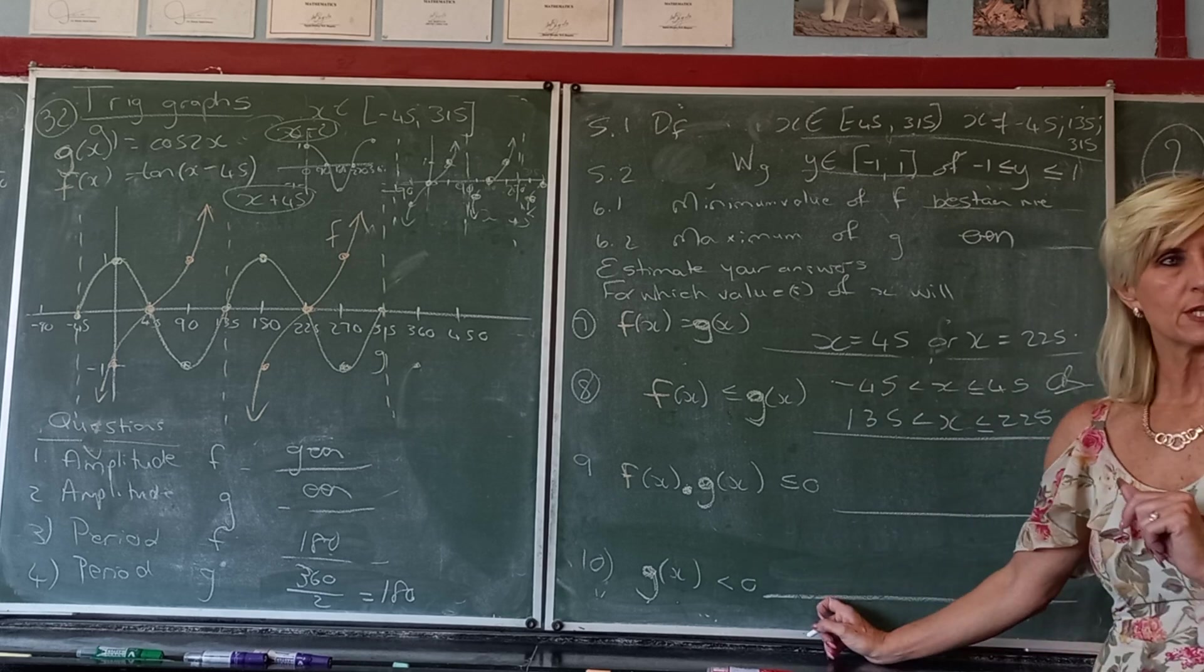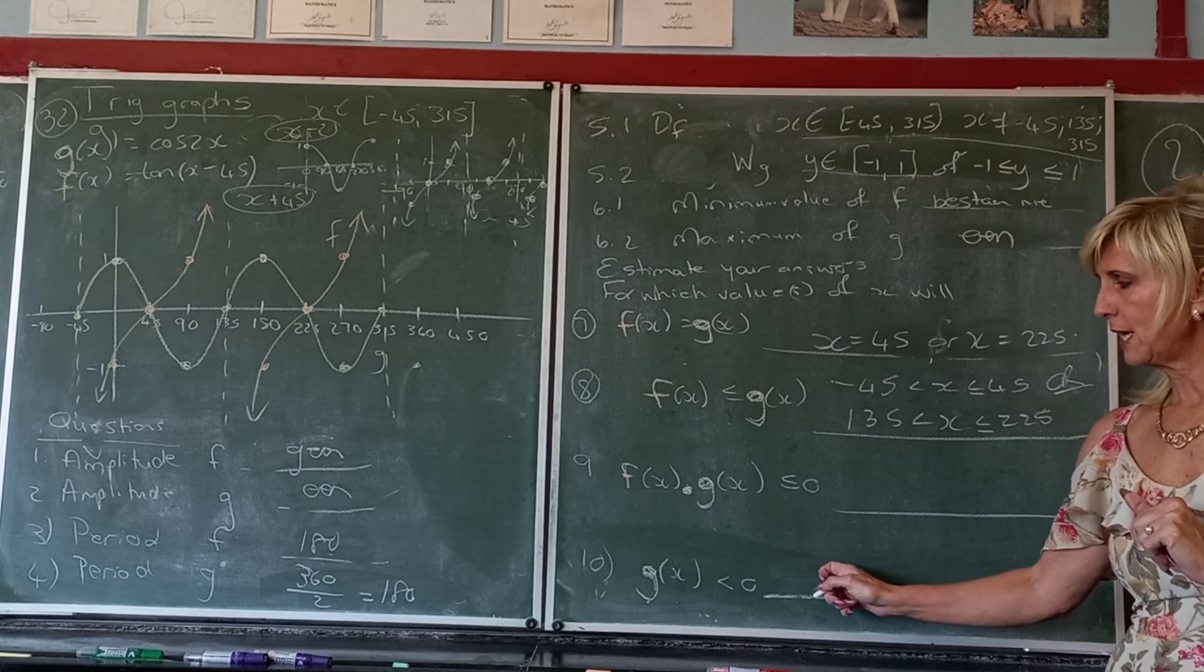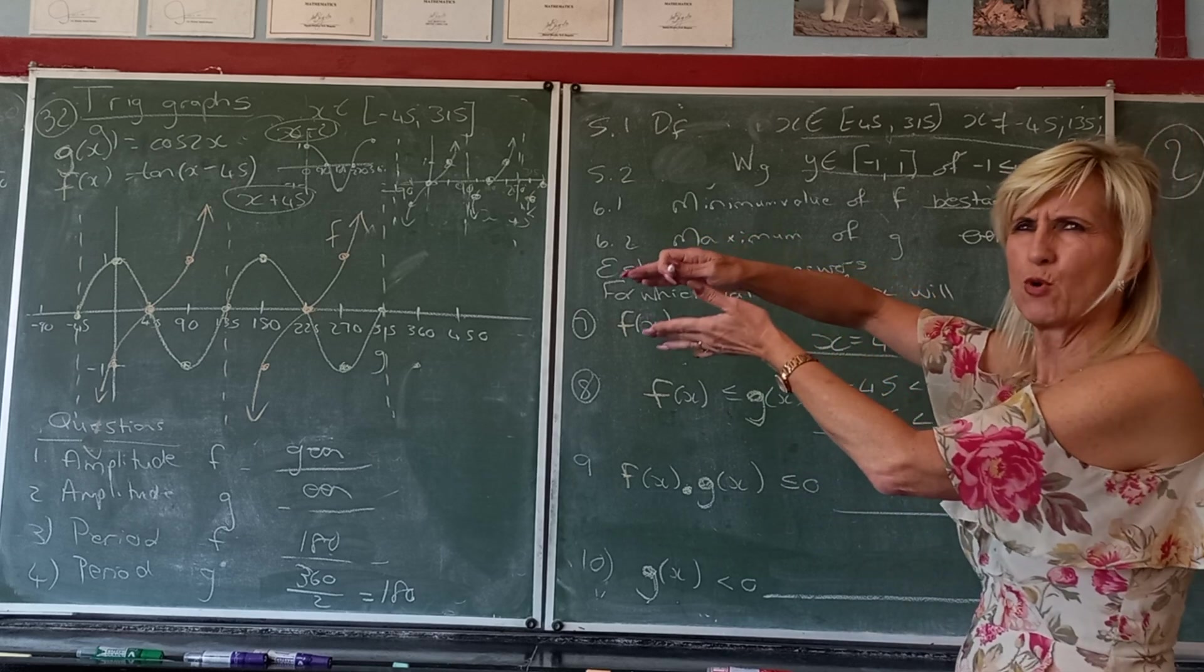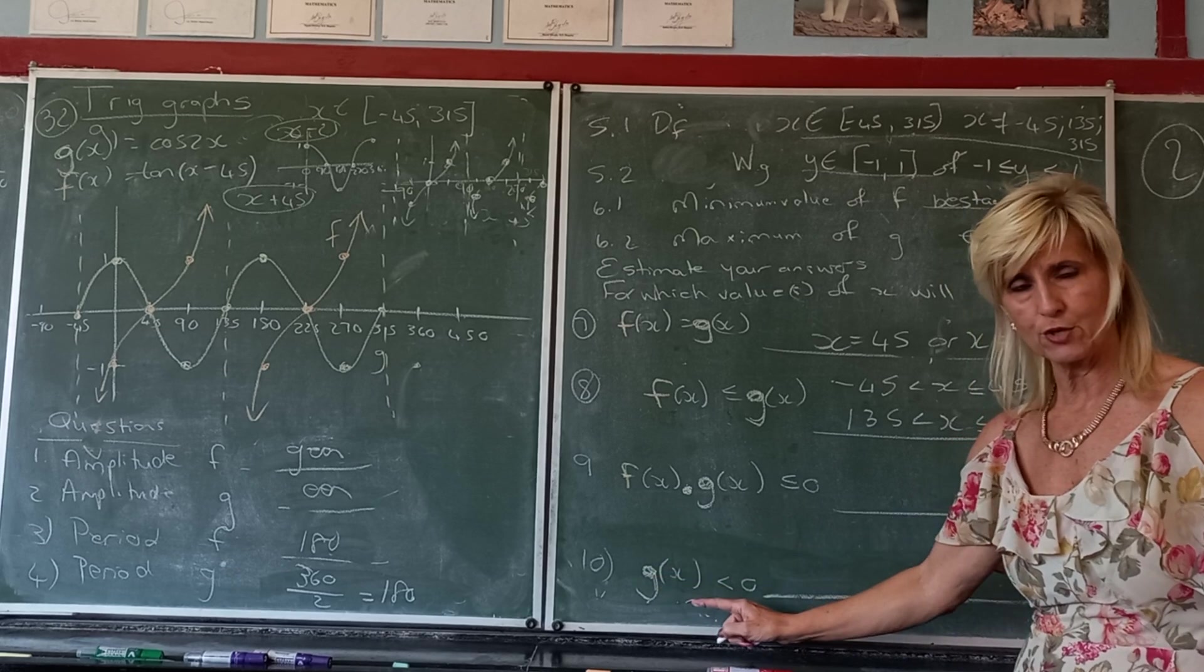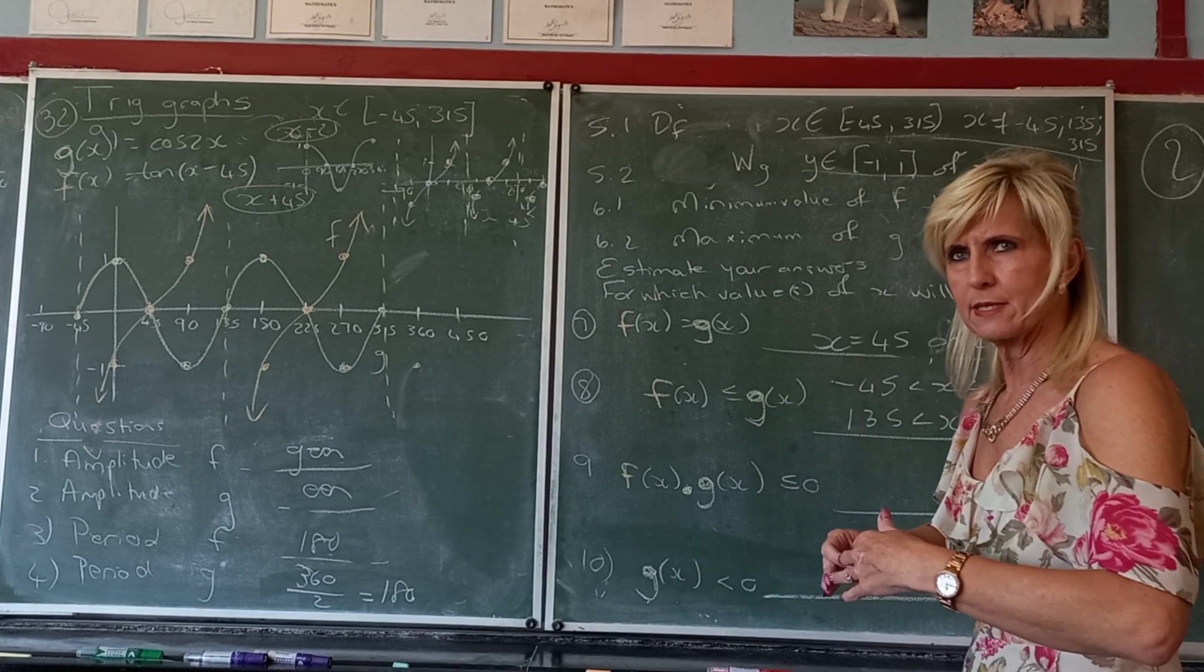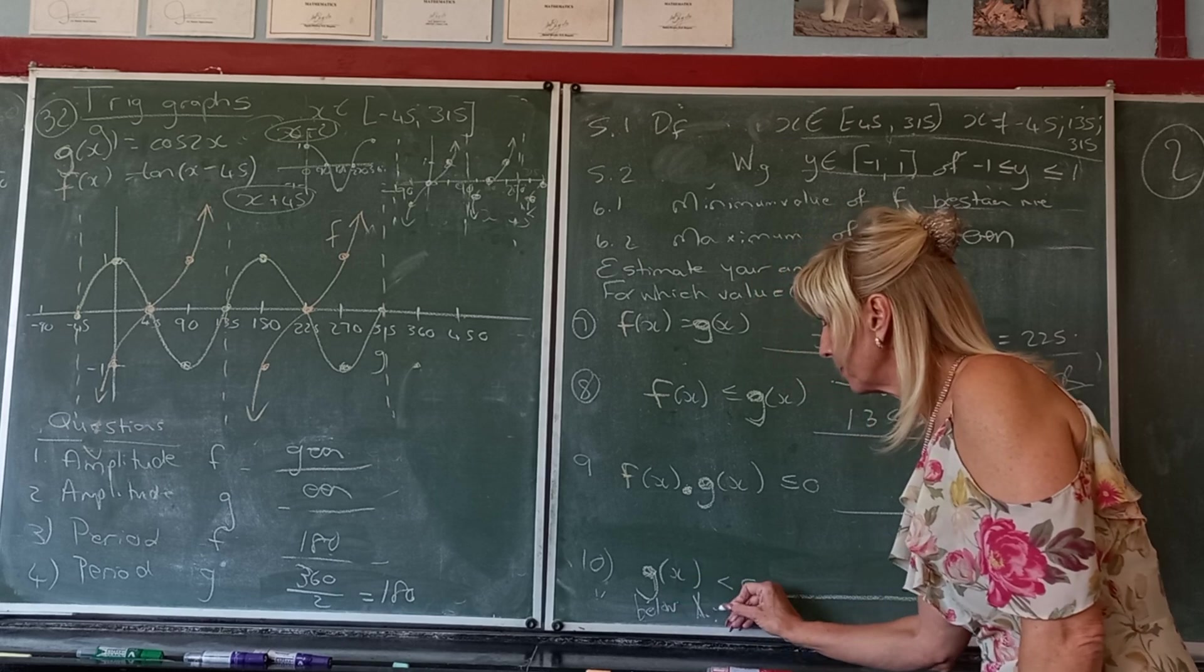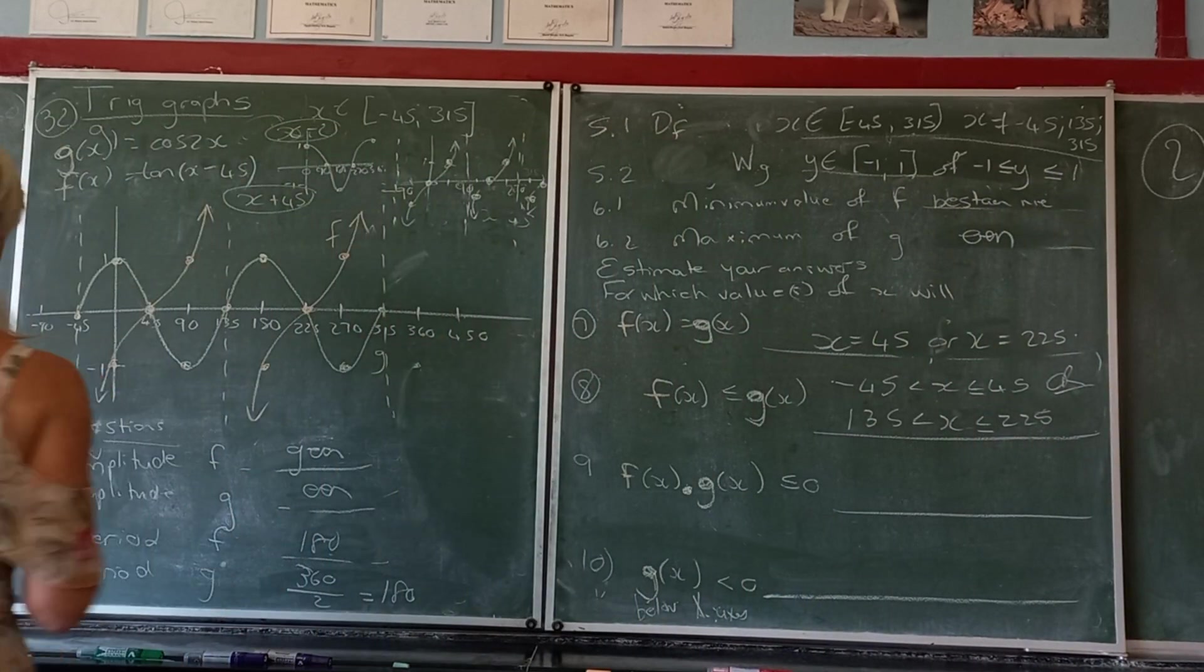Then I'm doing number 10 first because it's quicker. Now for g(x) smaller than 0, what does it mean? g is the yellow graph. What does it mean if I'm looking for the graph smaller than 0? Remember that this represents your y value. g(x) is always your y value. So in the yellow graph, where is the y below the x-axis? The negative sign. Are you with me in plain English? Where is the yellow graph below the x-axis?